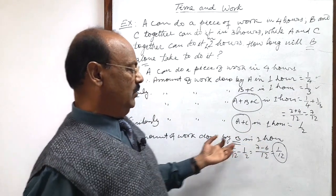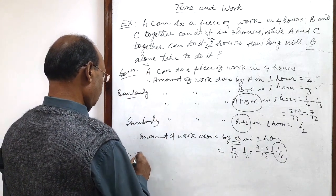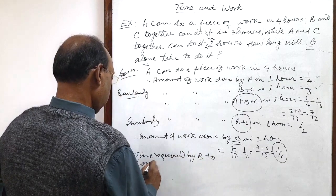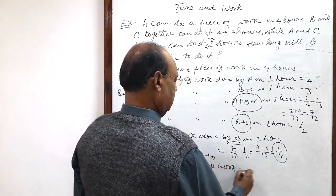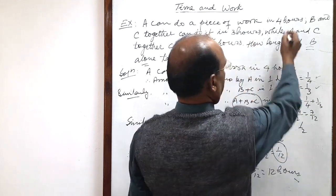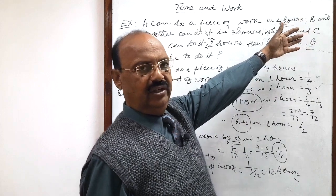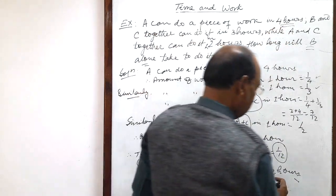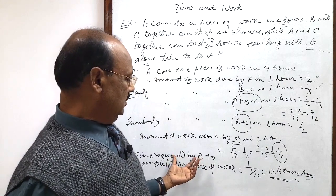So, the time required by B to complete this piece of work is equal to 1 upon 1 by 12, which equals 12. Therefore, time required by B to complete the piece of work is 12 hours. We must be very careful — sometimes the unit may be days instead of hours, so the answer would be in days. But here the unit of time is hours, so the answer is 12 hours. This is the time required by B to complete the work when working alone.